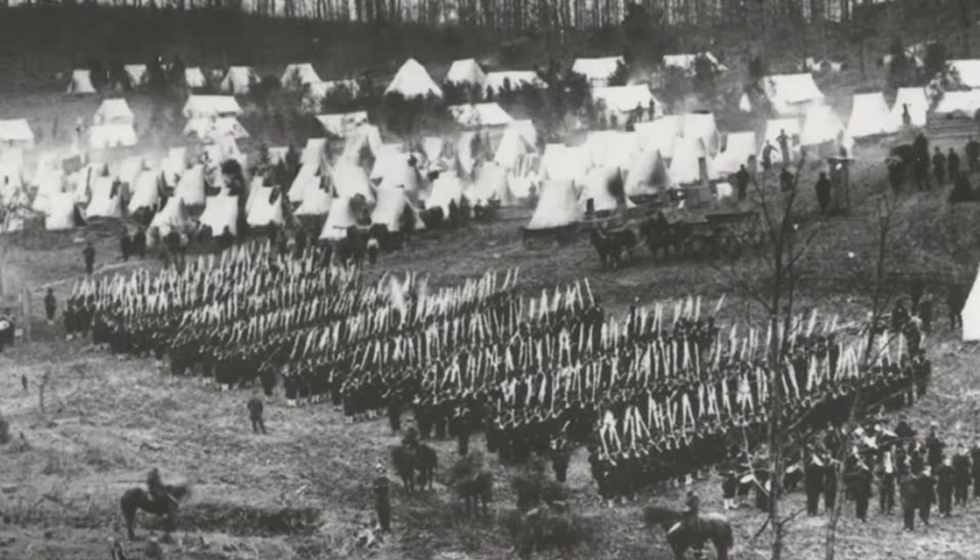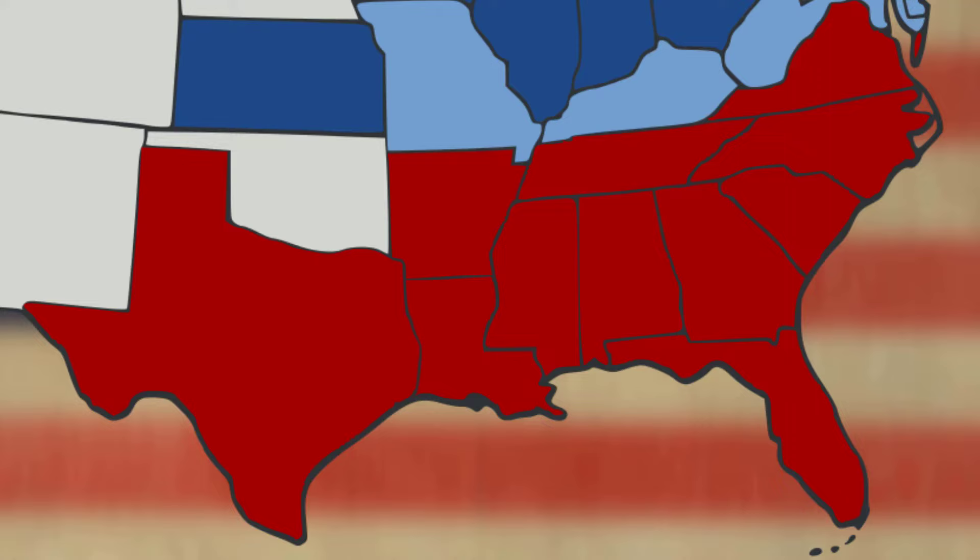The South, or the Confederacy, or the Confederate States of America, was made up of 11 states, and they believed themselves to be a new country separate from the United States of America.